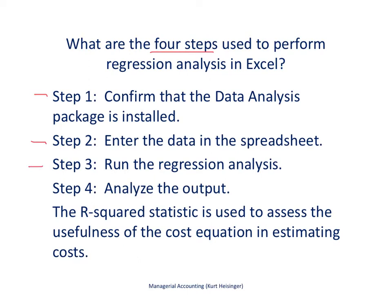Once we run the regression analysis, we'll be analyzing the output. What will come from that output is our total fixed cost estimate (F) and our variable cost per unit (V). We'll also talk about the R-squared statistic and how we can use it to assess the information that comes out of the regression analysis.